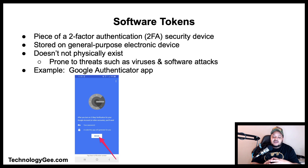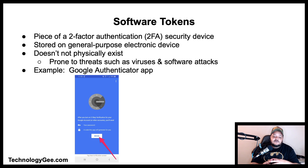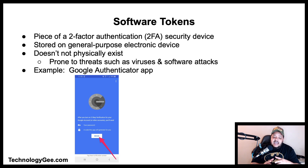Next we have what is called a software token. A software token is a piece of a two-factor authentication security device that may be used to authorize the use of computer services. Software tokens are stored on a general purpose electronic device such as a desktop, laptop, PDA, or mobile phone and can be duplicated. Because software tokens are something one does not physically possess, unlike a hardware token, they are exposed to unique threats based on duplication of the underlying cryptographic material, such as computer viruses and software attacks.